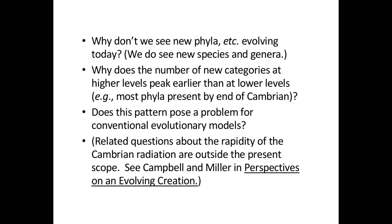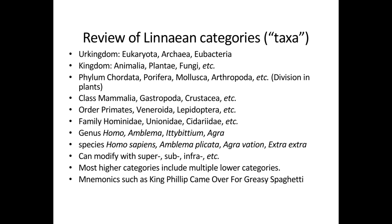There are a number of related questions — for example, why do you have apparently relatively rapid radiation in the Cambrian? I'm not dealing with that here; there are papers that address those things. Just a quick review from general biology: kingdoms include phyla or divisions if you're talking about plants. Those include classes, then orders, families, genera, species.